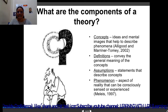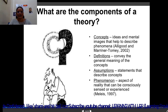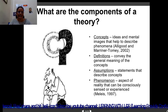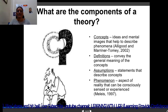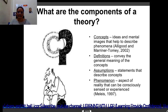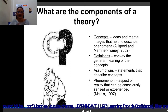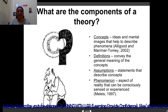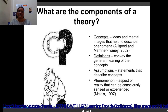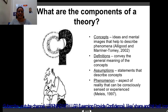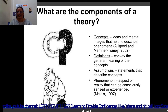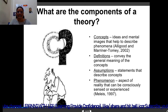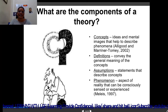There are four components: concepts, definitions, assumptions and phenomenon. Concepts are the ideas and mental images that help to describe phenomenon. The concepts present in our brain come into reality in the form of phenomenon. Definitions convey the general meaning of the concepts — the idea we have in our brain, we convey in a general meaning. Then assumptions are statements that describe concepts and phenomenon — aspects of reality that can be consciously sensed or experienced.